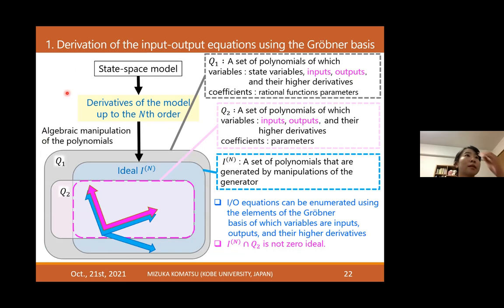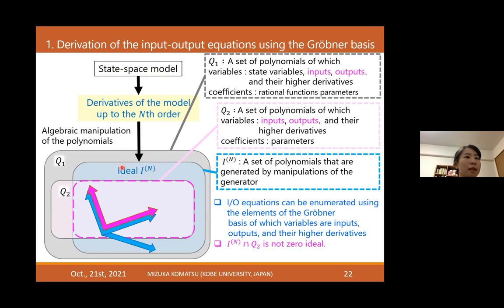In this talk, for a state-space model, we take derivatives of the model equations up to the nth order and consider the ideal, denoted I^n, generated by these generators. Since we are interested in the input-output relationships, we consider the intersection of this ring and this ideal. By computing the Groebner basis, we can obtain the input-output equations that describe this intersection.